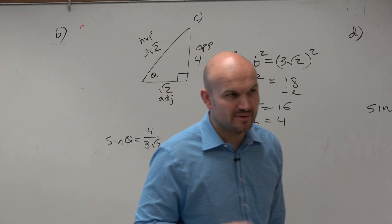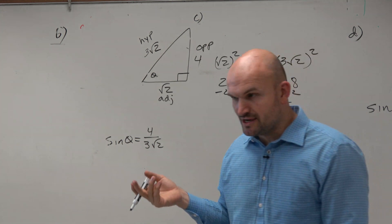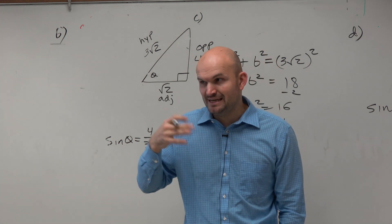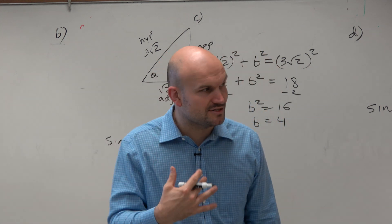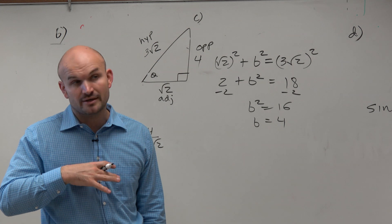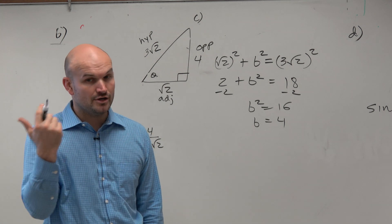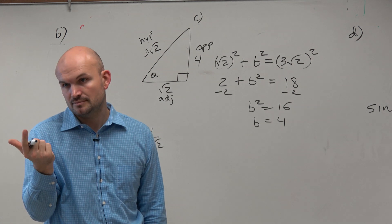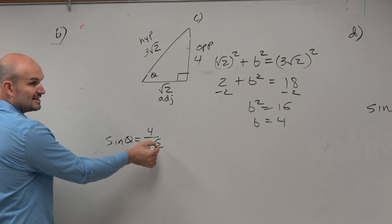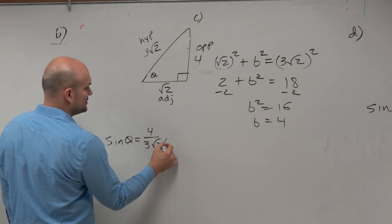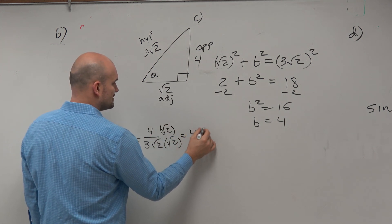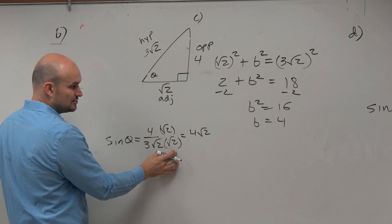For this lesson, because the multiple choice problems you'll be doing will be simplified, and for later chapters we will want to use simplified answers, we are going to practice and expect that you will simplify every single ratio — meaning radicals will be simplified and no radicals will be in the denominator. So we've got to rationalize the denominator, multiplying by square root of 2 over 2, giving 4 times square root of 2 over 6.